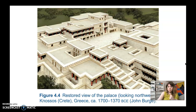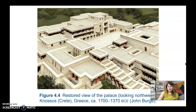Theseus defeated the monster and found his way through the maze-like palace with the aid of the king's daughter Ariadne, who gave him a spindle of thread to mark his way through the intricate floor plan, otherwise he might have gotten lost forever after killing the bull. The English word 'labyrinth' actually comes from this myth of the maze-like palace at Knossos. The legend is likely based on something true but embellished over time through oral storytelling, adding elements like the half-man, half-bull Minotaur.